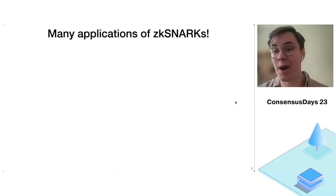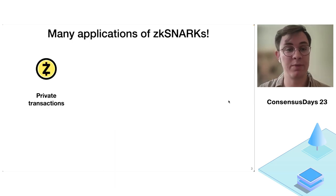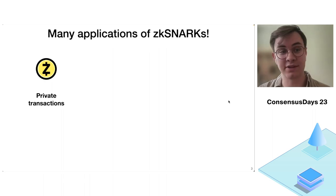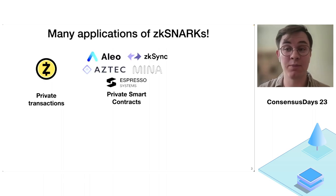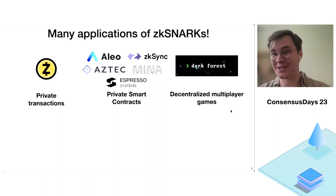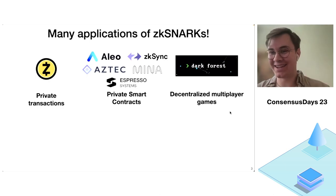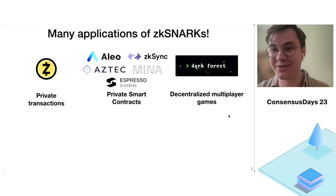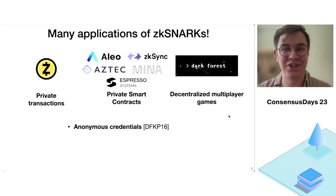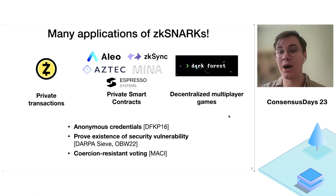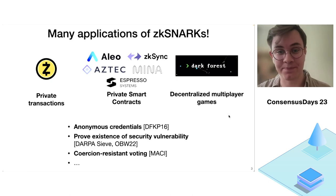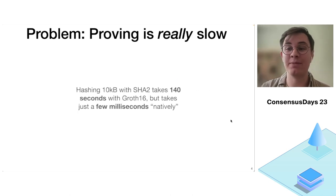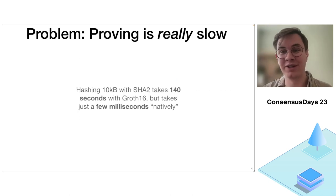All these properties have made ZK-SNARKs very attractive, and they're used in numerous deployed protocols — things like private transactions, private smart contracts, and decentralized multiplayer games. In general, they're a very useful tool that shows up in many applications in cryptography. But one problem is that proving is very slow.